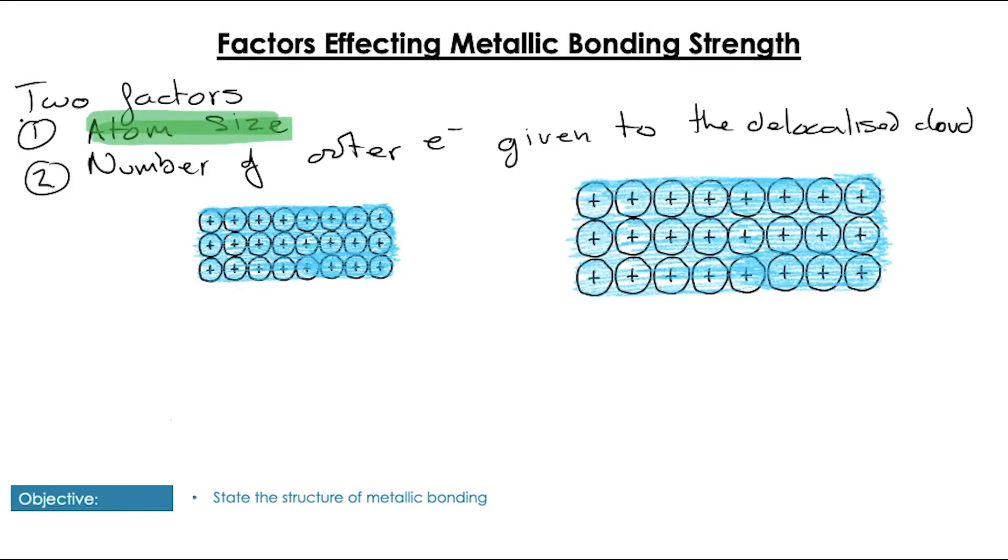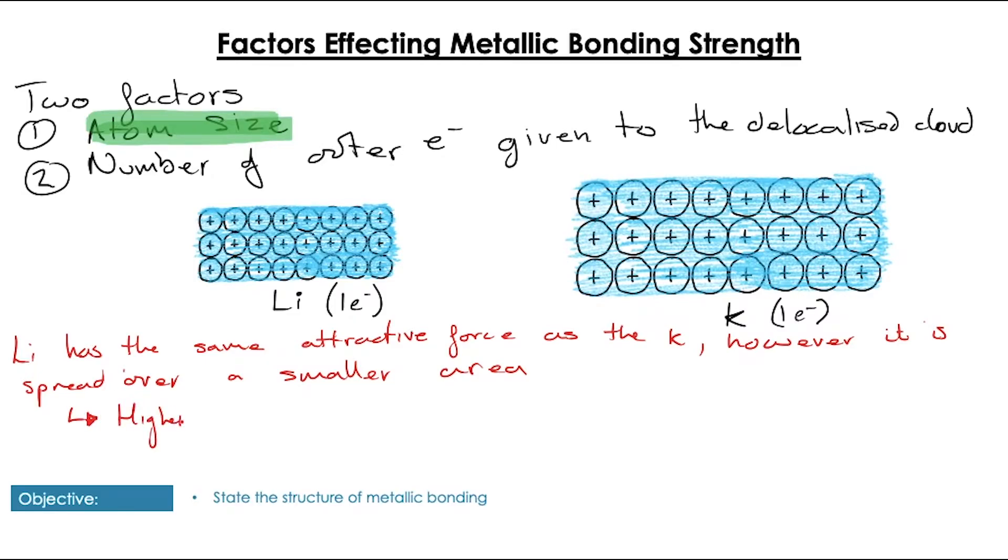Well, if we compare lithium and potassium, which both have one electron in the outer shell, so they have the same number of electrons given to the delocalized cloud, lithium has the same attractive force as that of potassium, except it's spread over a much smaller area. So, we can say that lithium has a higher charge density. There's one electron is given up over a smaller area means the attractive force is concentrated, if you like, more in a smaller area. And then we get a higher force of attraction between those nuclei and the delocalized cloud of electrons.